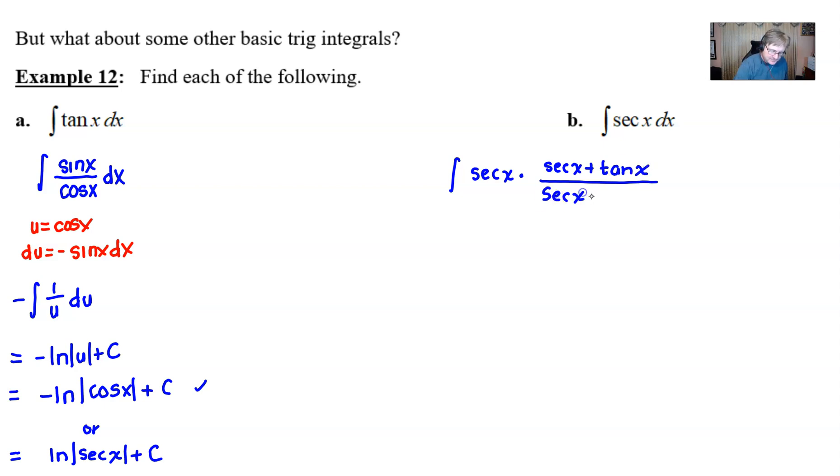Not what you would expect, but it's one of those little tricks that's going to make this integrable. What's the choice for u? Just as we did in part a, u is going to be the denominator, so u is going to be secant plus tangent. What is the derivative of secant plus tangent? The derivative of secant is secant times tangent, add that to the derivative of tangent which is secant squared.